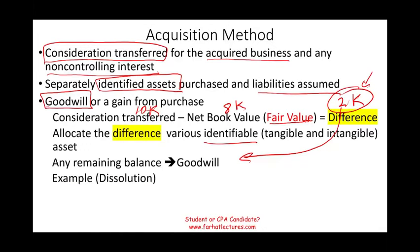The best way to illustrate this is to work an example, because if you work an example you will see how this process works. This is the basics, the foundation of advanced accounting. Although we're not going to be doing consolidation in this session, this is the basis of it. Please pay attention to this example — we're going to assume we dissolve the other business, so the other business will be gone. I'm going to go to the Excel sheet and work an example.